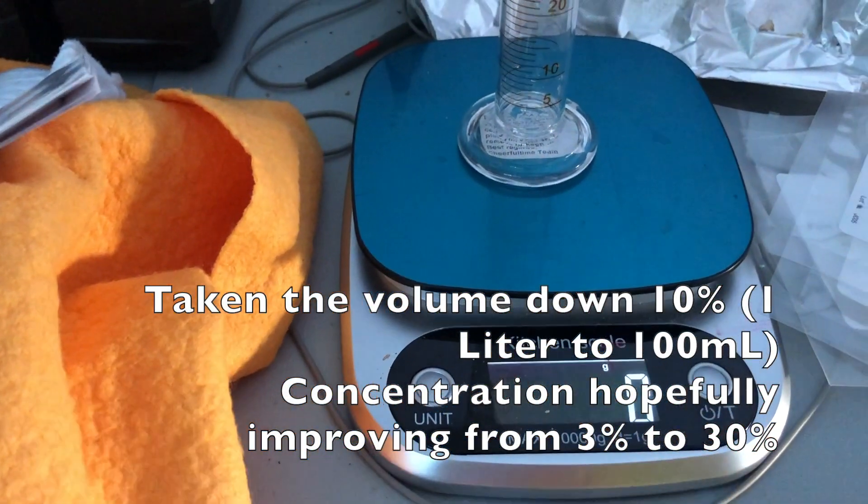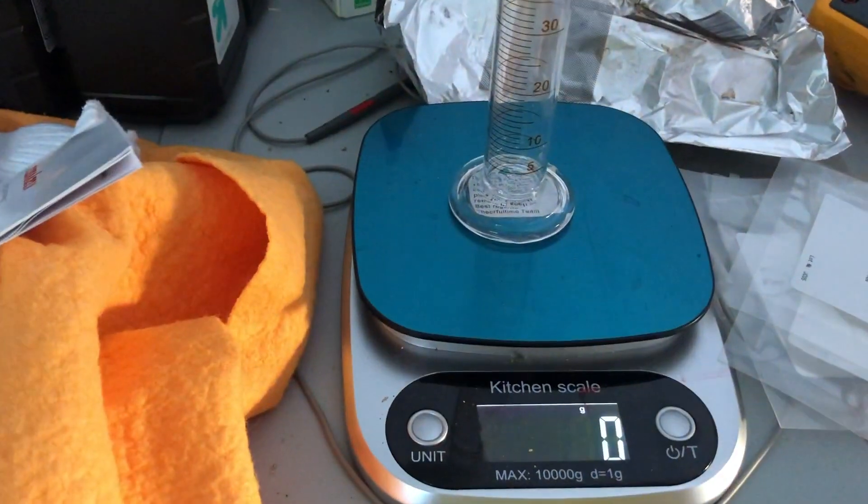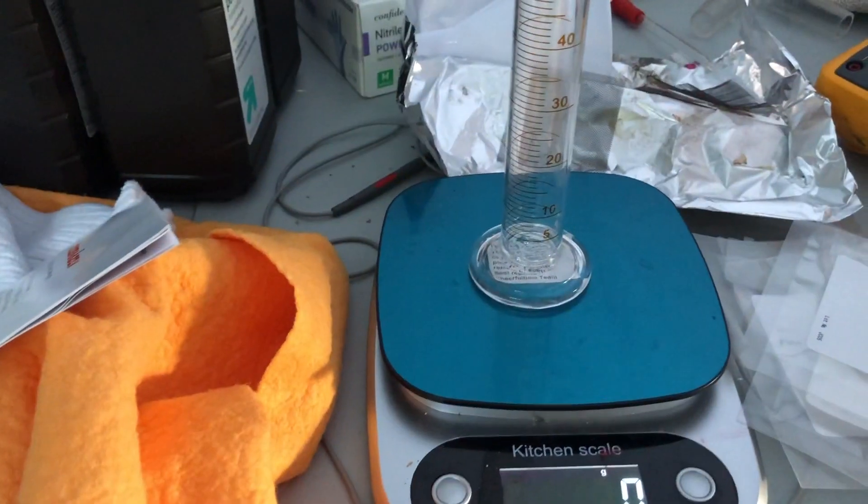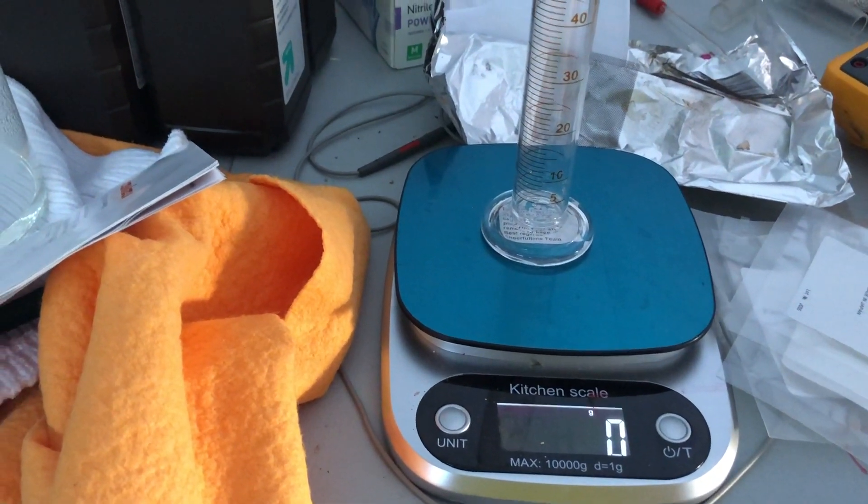I'm gonna turn on my scale, zero out the beaker there with the funnel. I'm gonna pour about 50 milliliters in and we'll check the density which will give us the estimate of what the concentration is.